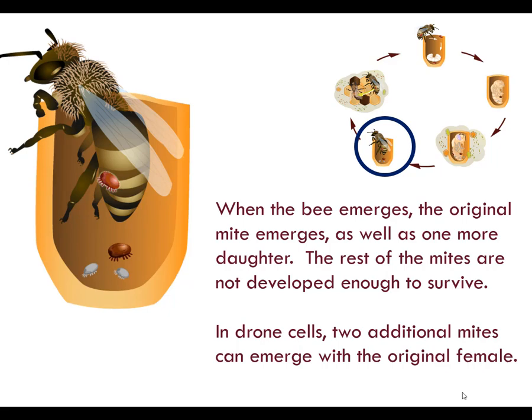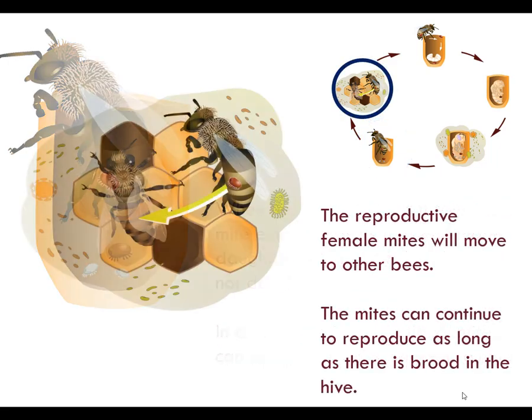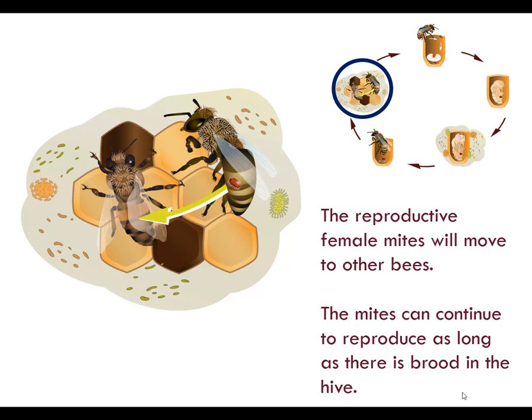In drone cells, two additional mites can emerge with the original female. The reproductive female mites will move to other bees. Mites tend to recognize and prefer nurse-aged honeybees, which puts the mites close to the developing honeybee larvae. The mites will leave the adult honeybees and enter honeybee larval cells to reproduce. Mites can continue to reproduce as long as there is brood in the hive.